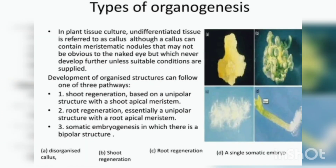In plant tissue culture, the adventitious undifferentiated tissue is called callus, and this callus contains meristematic nodules that are further developed. Development occurs in three pathways: shoot regeneration, which is a unipolar structure with shoot apical meristem; root regeneration, which is a unipolar structure with root apical meristem; and somatic embryogenesis, which has a bipolar structure where both shoot and root are present.